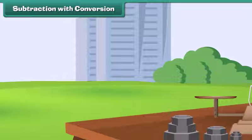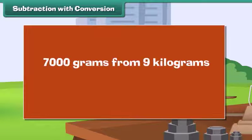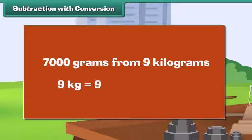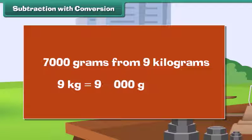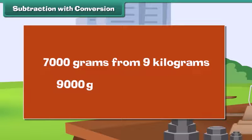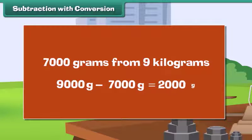Subtraction with conversion: Let us subtract 7000 grams from 9 kilograms. 9 kg equals 9 into 1000 grams, which is 9000 grams. So, 9 kg minus 7000 grams equals 9000 grams minus 7000 grams, which equals 2000 grams.